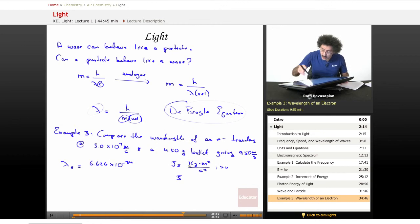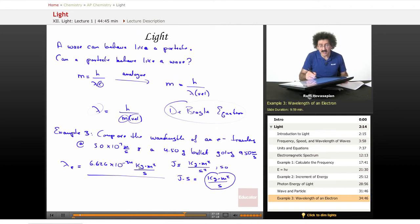So a joule second is equal to kilogram meter squared per second. The second on top cancels one of the seconds down below. So that is the unit. So it's going to be kilogram meter squared per second. Now that means that mass has to be expressed in kilograms because the units have to match.